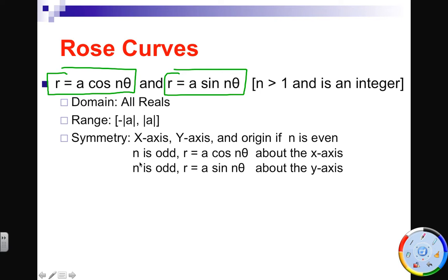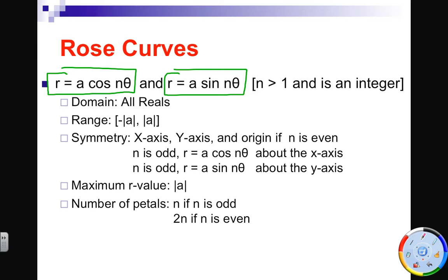If n is an even number, it has all types of symmetry. That's kind of cool. If n is odd for cosine, it's symmetric about the x. And if n is odd for sine, it's symmetric about the y-axis. The maximum r value or the maximum distance from the origin that your graph will get is a. Here's the cool thing. The number of petals on your graph. We graphed that pinwheel looking thing. We would say that has three petals. And if you know that we graphed, what would we graph? Sine, I think. One or the other. Yeah. Sine of three theta. There were three petals because an n was three. So if you let n be an odd number, you get n number of petals. If you let n be an even number, you get twice that many petals.